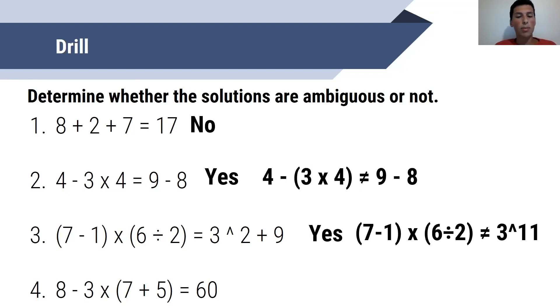Finally, for this fourth example, this is ambiguous as well. I'm going to interpret this as 8 minus in parentheses 3 times in parentheses 7 plus 5. 7 plus 5 is 12, and 3 times 12 is 36. 8 minus 36 is some negative number, and that is definitely not equal to 60.